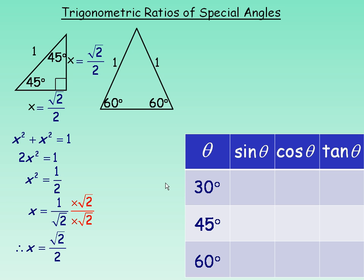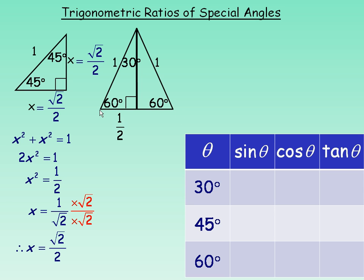To get the 30 and 60 degree angles, I'm going to use this equilateral triangle where all sides are 1. I'll drop a perpendicular from the top vertex down to the opposite side. In that triangle, if the base angles are 60 and 60, then the top angle is 30 degrees. If the full base is 1, then from the midpoint to the corner is one half. So in this 30-60-90 triangle, the hypotenuse is 1 and the base is one half.